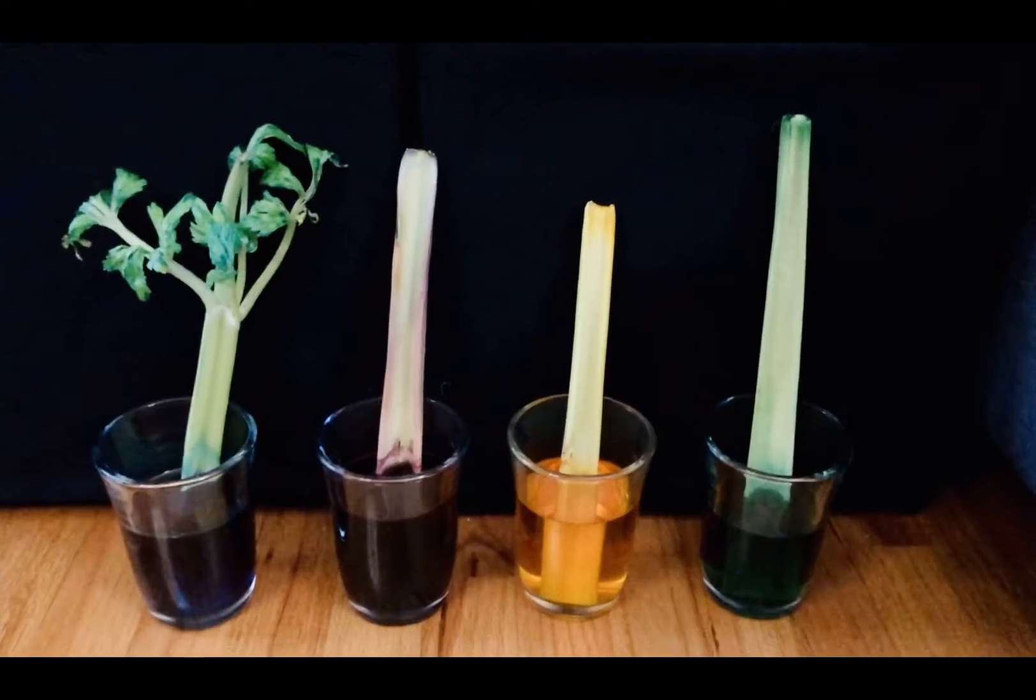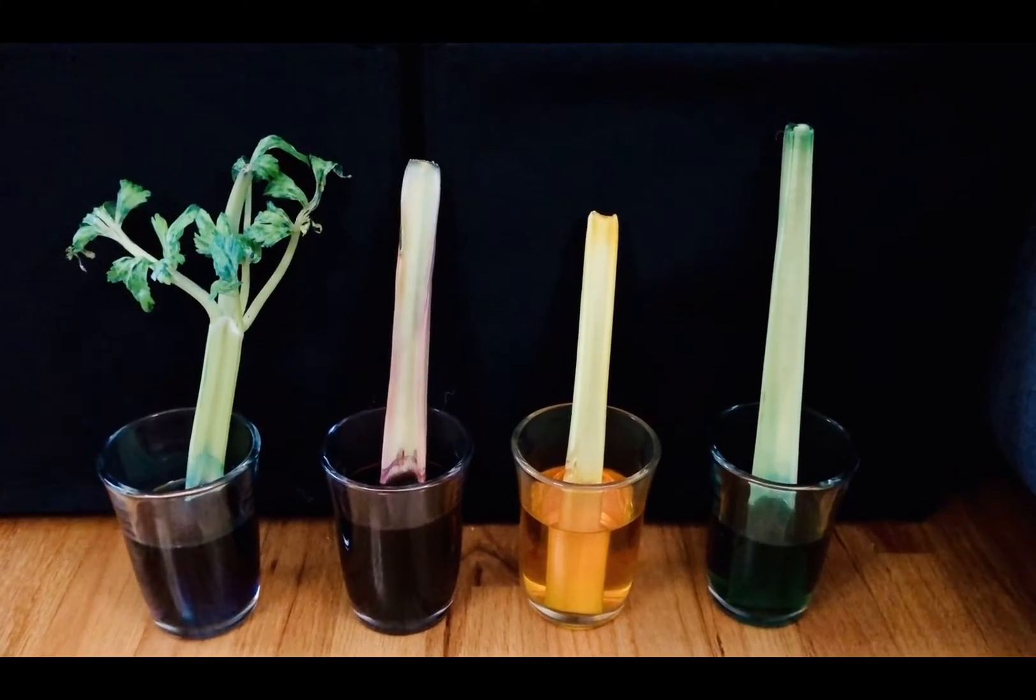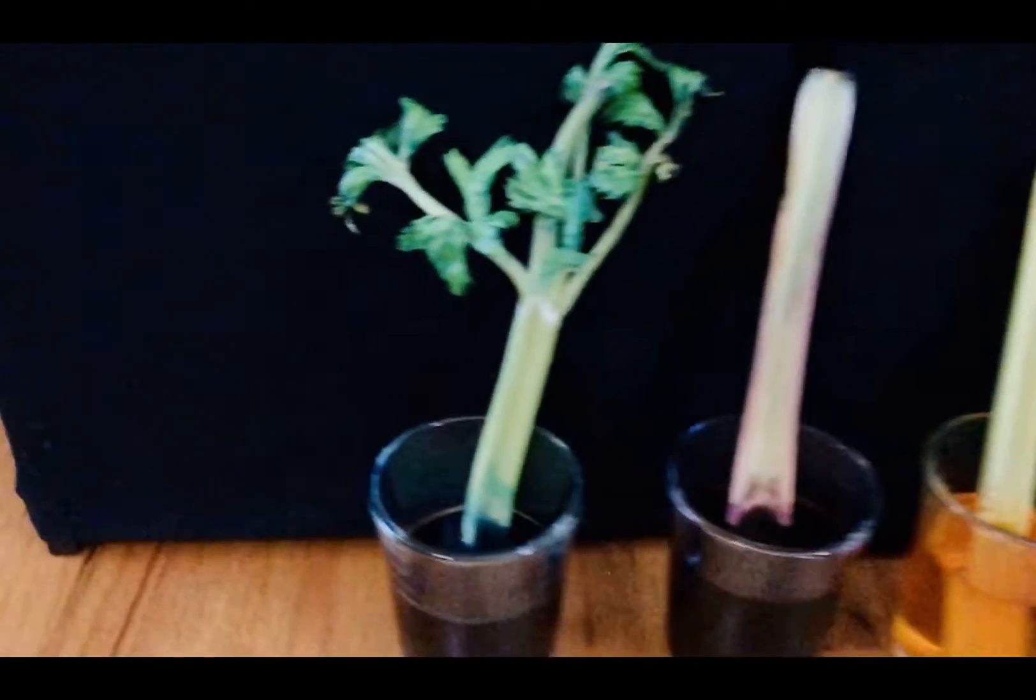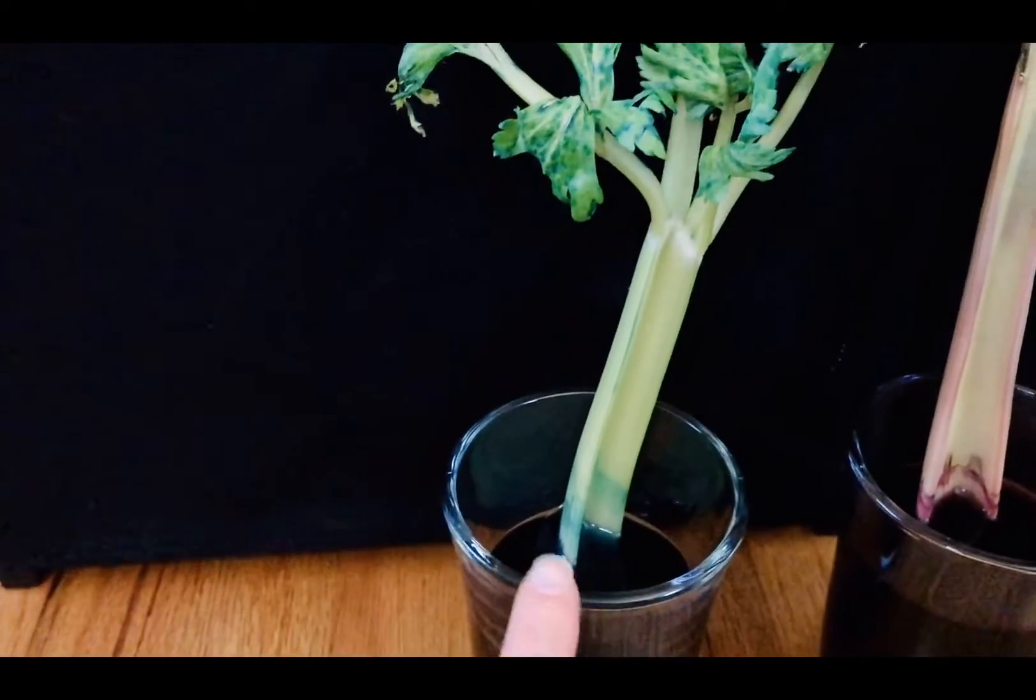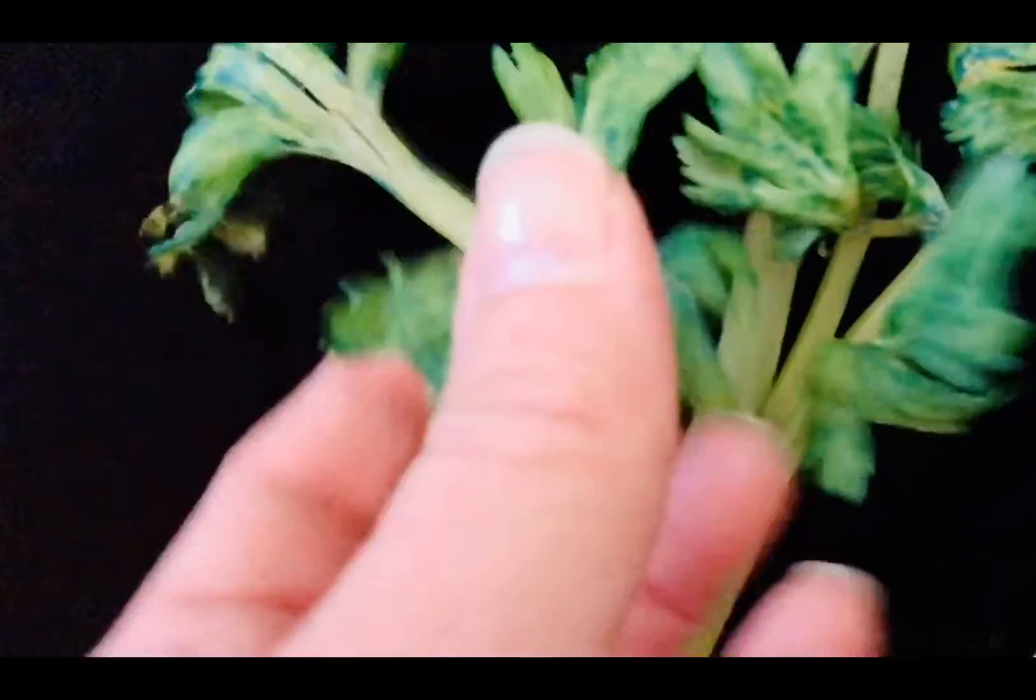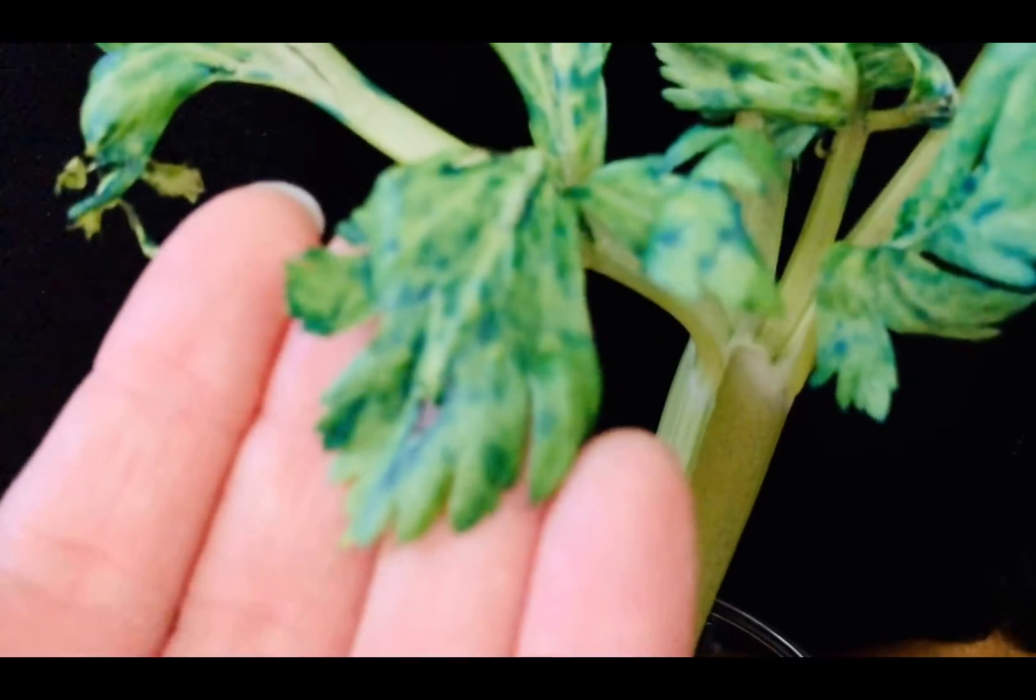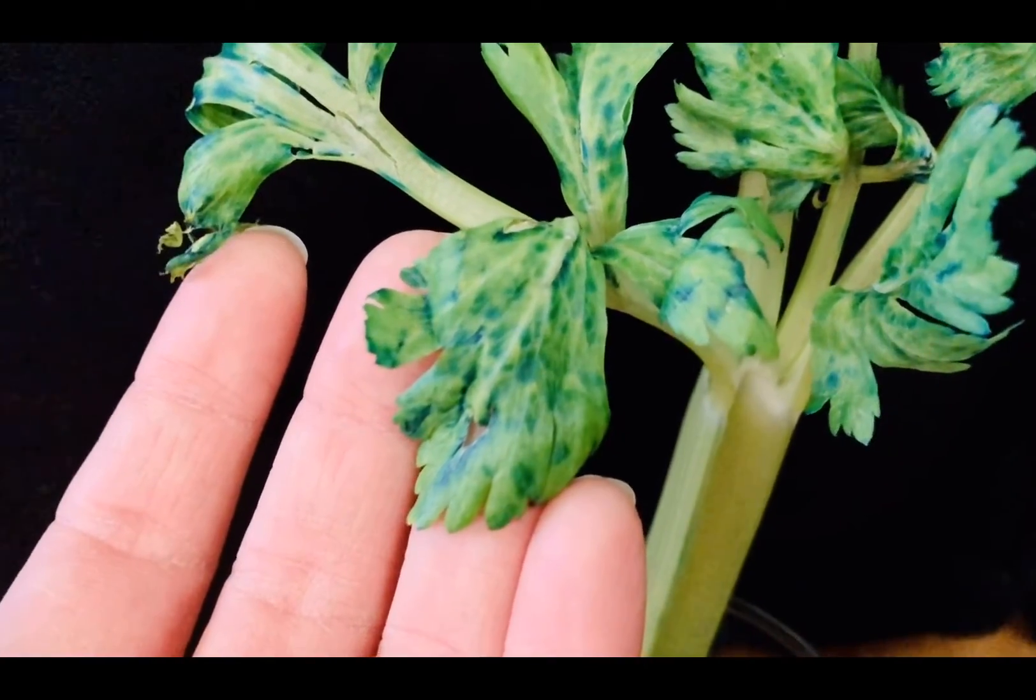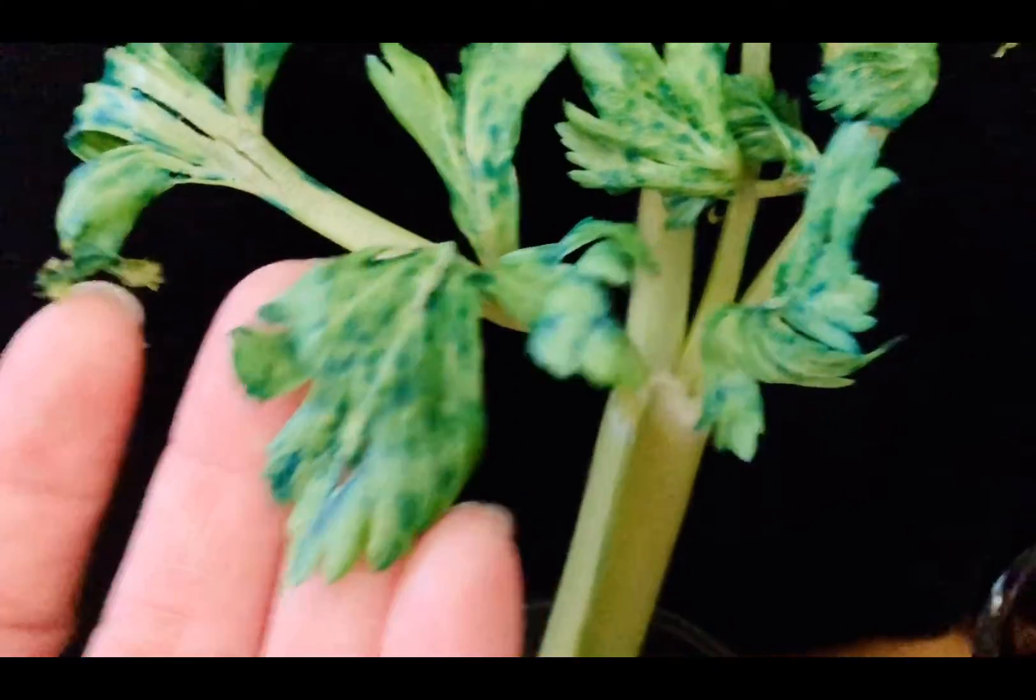Hi friends! I started my color changing celery experiment a couple of days ago and I wanted to show you what they look like. In this cup I used blue food coloring and a leafy piece of celery, and if you look closely you can actually see that some of the blue food coloring has made it to the leaves.